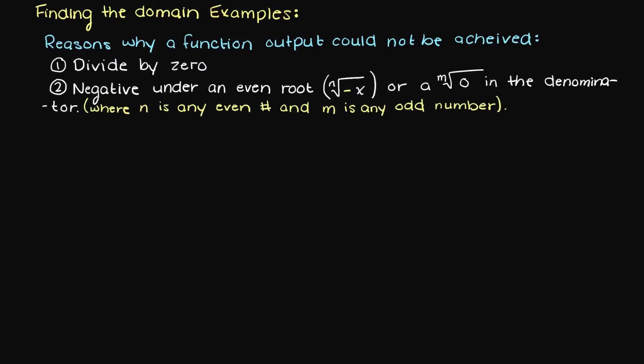So let's get into the examples. The first question states f(x) equals x plus 9. In this example, there is no potential for a divide by zero or a negative under an even root, so all real numbers can be used as inputs to this function, and a proper output can always be found.